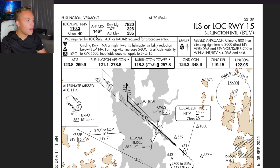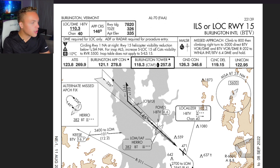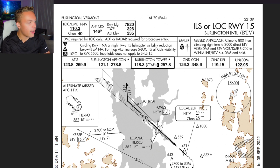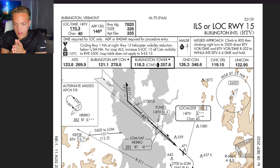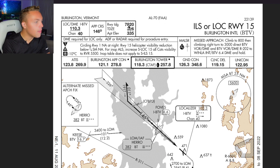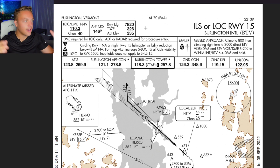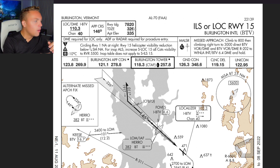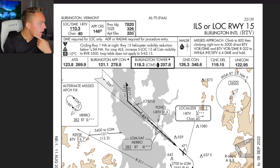Let's talk about this approach plate — it can look confusing but it's really not. There's always a title: this is the ILS to runway 15 into Burlington International. We pick up lateral and vertical guidance through a frequency; our receiver is tuned to 110.3. The final approach course is 146 degrees — basically southeast. The runway has 7,800 feet of landing distance available, the touchdown zone elevation is 326 feet, and the airport elevation is 335 feet.